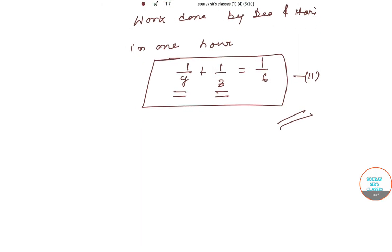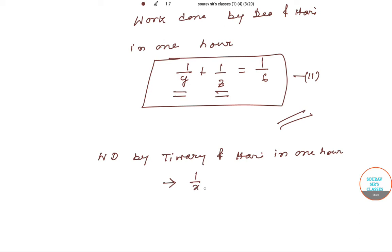Work done by Tiwari and Hari in one hour gives us: 1/X + 1/Z = 1/3. We label this as Equation 3 and box it as well.